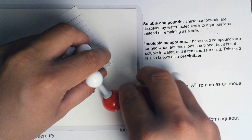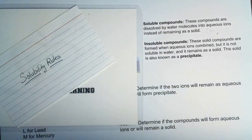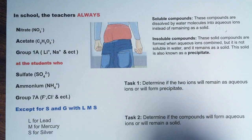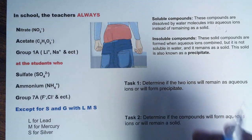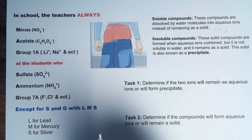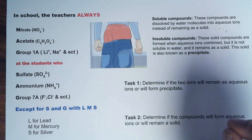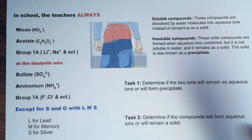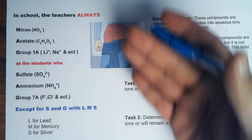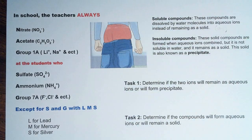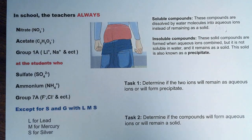Now let's get back to memorizing the solubility rules — that's where it gets tricky. The most difficult part of solubility is memorizing the solubility rules, because if we don't know the rules of solubility, there's no way we can solve any problem that relates to solubility. But the good thing is that we have a memory device that allows us to memorize most of the common solubility rules.